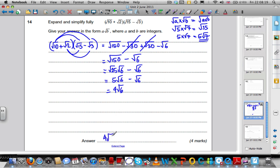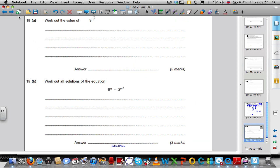Hence, the answer is 4 root 6, where A is 4 and B is 6. Okay, last question. Question 15. 9 to the negative 3 over 2. Well, first of all, let's work out 9 to the 3 over 2.